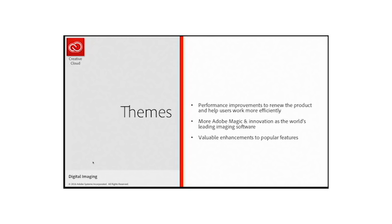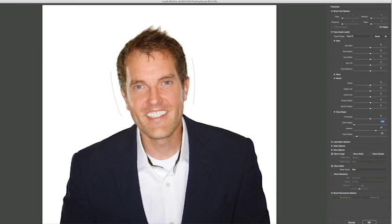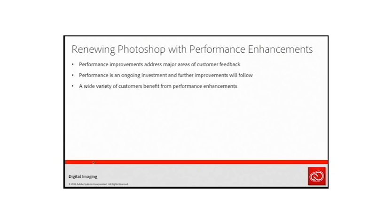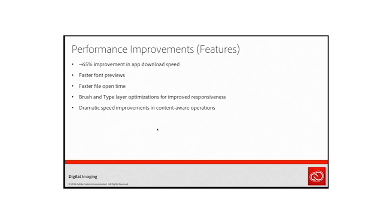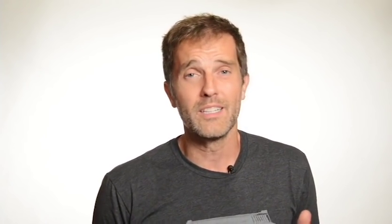First, there are a lot of performance updates — under-the-hood things making everything run faster. There's also new magic: new tools, new spaces, new ways Photoshop takes a lot of the work out of our hands. Performance enhancements include a 65% improvement in app download speed, faster font previews, faster file open times, brush and layer optimizations for improved responsiveness, and dramatic speed improvements in content-aware operations. There's also a new content-aware tool, which we'll get to in a moment.